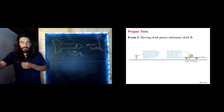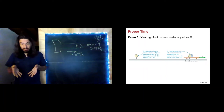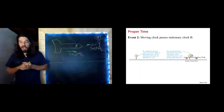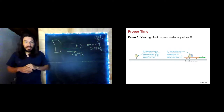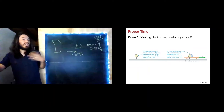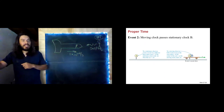Compare that to an observer standing next to clock A. They see event one — the train car passes clock A — right in front of them. But event two — the train car clock passes clock B — happens way down there. So event one and two happen at different locations for this observer, therefore they measure a greater time interval. And indeed, they do.